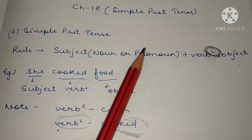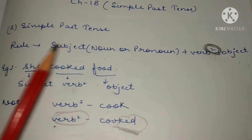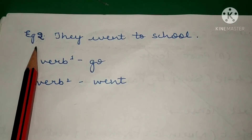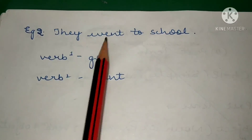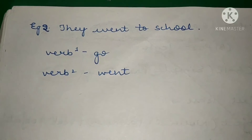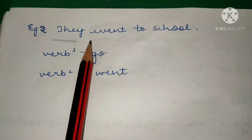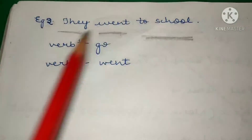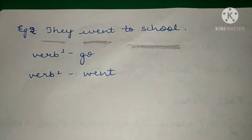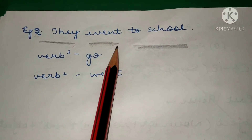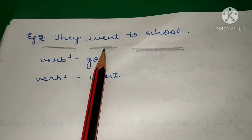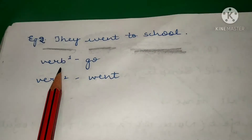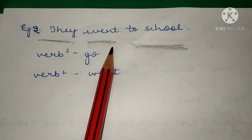Now let's see this example: 'They went to school.' Here, 'they' is your subject, 'went' is your verb — and it is verb ki second form — and 'to school' is your object. So: subject — 'they'; verb ki second form — 'went'; object — 'to school.'